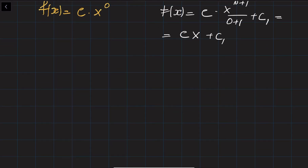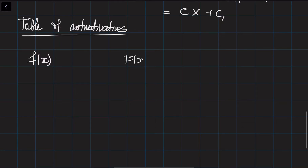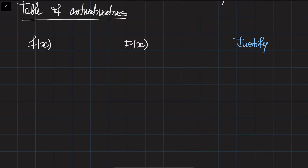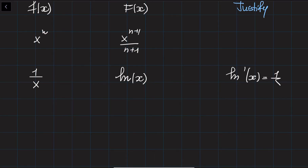Let me give you a table of antiderivatives. We'll write small f of x in the first column, its antiderivative in the second column, and the justification in the third column. For f of x equals x to the power of n, the antiderivative is x to the power of n+1 divided by n+1 — this is what we already showed. If f of x equals 1 over x, its antiderivative is ln of x, because the derivative of ln x equals 1 over x.